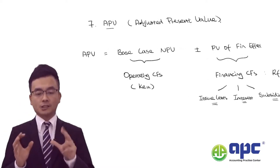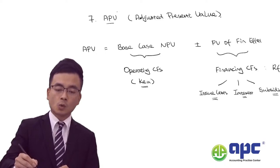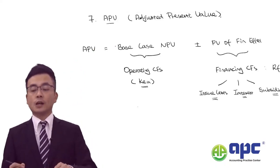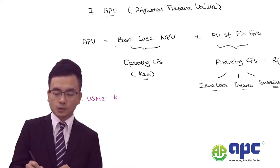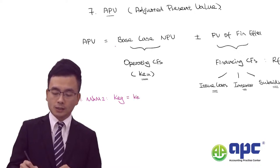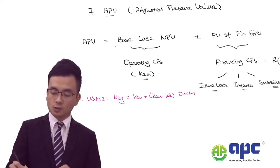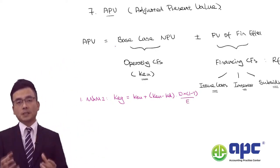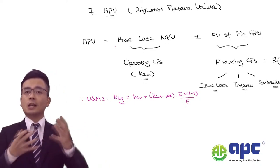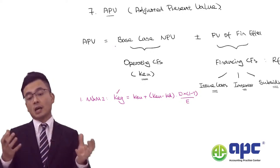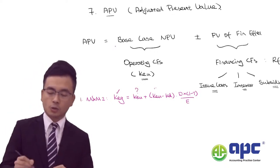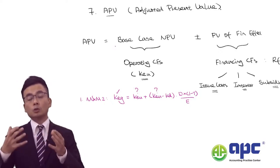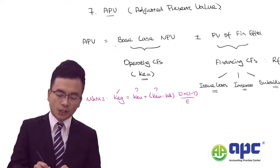To calculate the cost of equity ungeared, I would use two ways. Firstly, referring to M&M proposition two: cost of equity geared equals cost of equity ungeared plus (cost of equity ungeared minus yield) times (debt value times one minus tax rate divided by equity). The examiner may give you the cost of equity geared and require you to calculate the cost of equity ungeared.